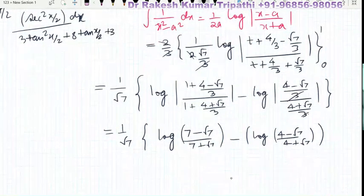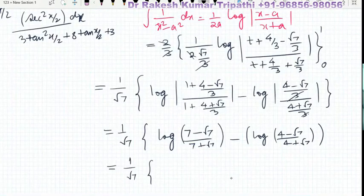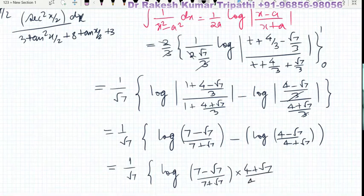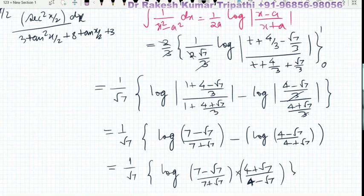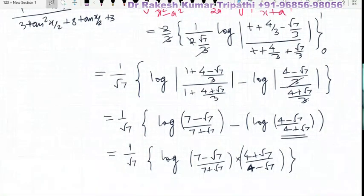So finally this is the answer. If you wish to simplify further, you may rationalize the denominator, or use the property log m − log n = log(m/n). Using this, the answer can be written as (1/√7) × log[(7 − √7)/(7 + √7) × (4 + √7)/(4 − √7)]. The (4 + √7)/(4 − √7) term is the inverted form, so it has been written accordingly. You may rationalize if you wish, otherwise this may be considered the final answer.